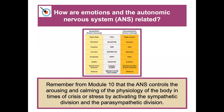How are emotions and the autonomic nervous system related? The autonomic nervous system controls the arousing and calming of the body's physiology in times of crisis or stress by activating the sympathetic division and the parasympathetic division. You can look at this chart to see how emotions are related to the ANS.